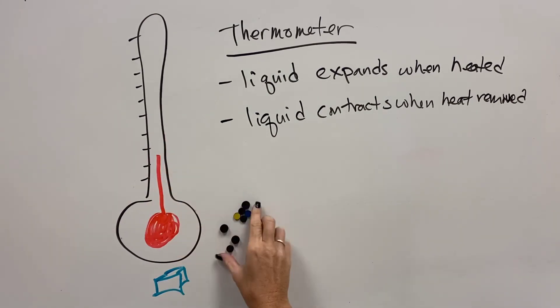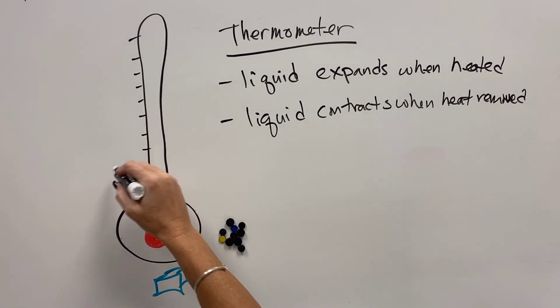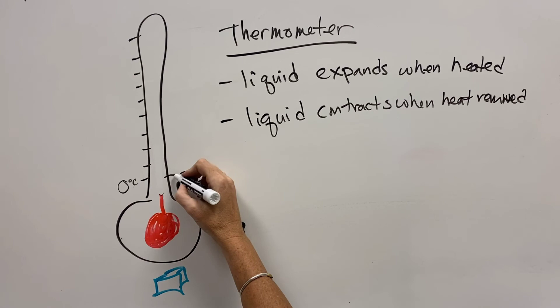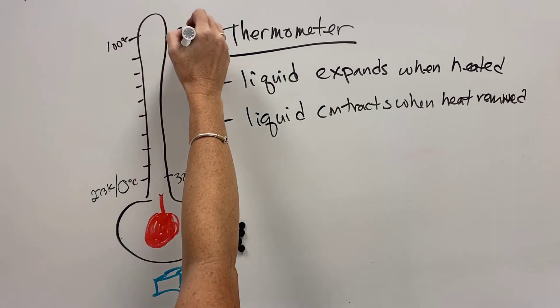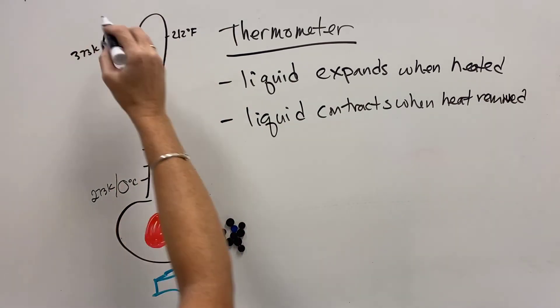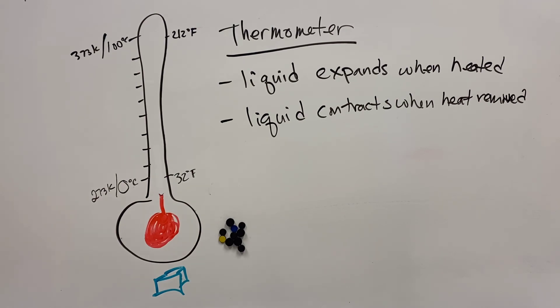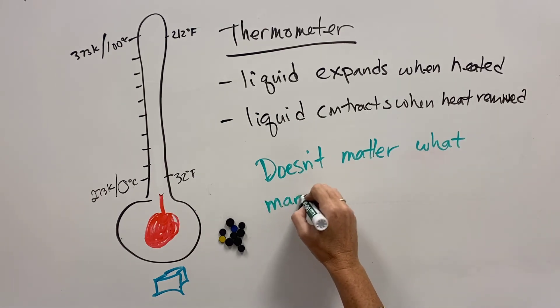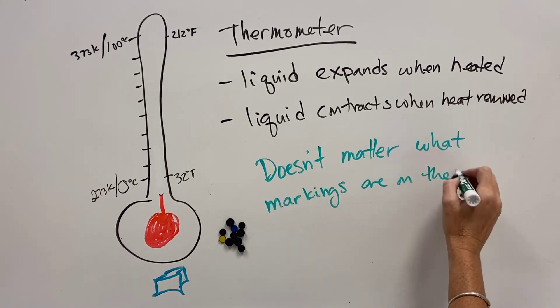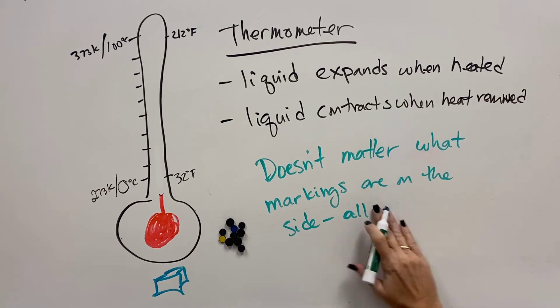If we remove heat, the particles slow down and clump together. They contract and the liquid moves down the thermometer tube. And so we can have markings that say zero degrees Celsius or 32 degrees Fahrenheit or 273 Kelvin. And we can also have readings that say, you know, different temperatures all the way up. And so it doesn't matter what scale, what measurement system is on the side. They all work the same way through this concept of expansion and contraction. And then we just made up these systems to define.